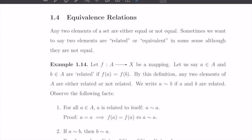It comes from the definition of sets. A set is a collection of distinguishable elements. Distinguishable means we can determine whether two elements are equal or not equal. That's part of the definition of a set. But sometimes we want to say two elements are related, similar, or somehow equivalent in some sense, although they are not equal.